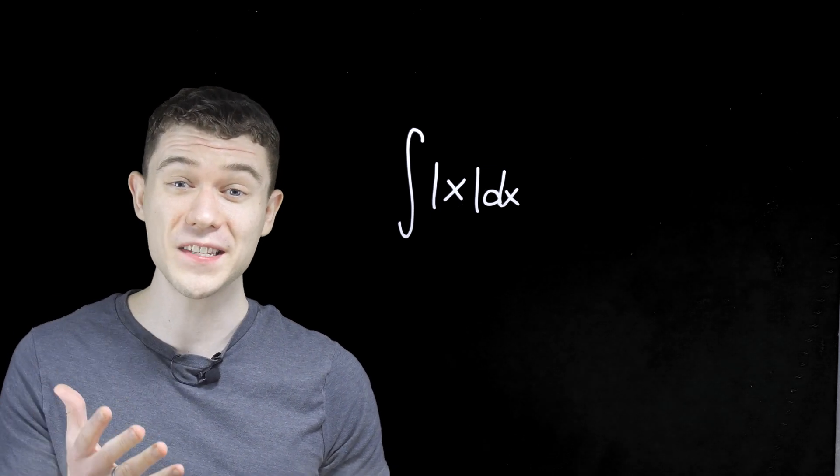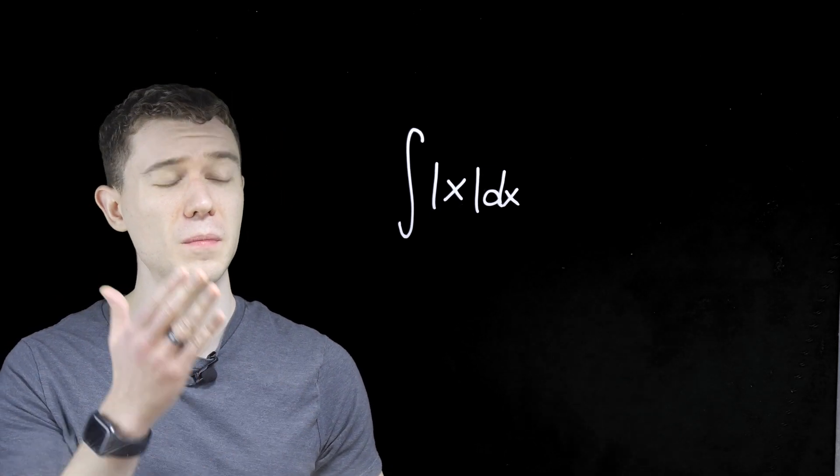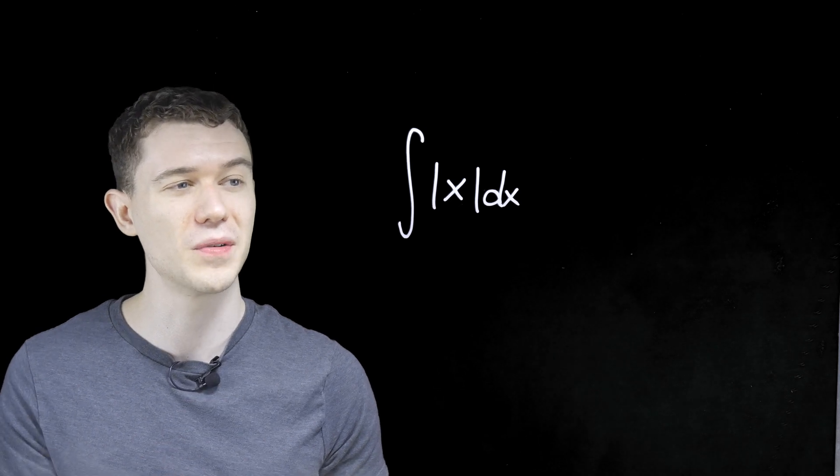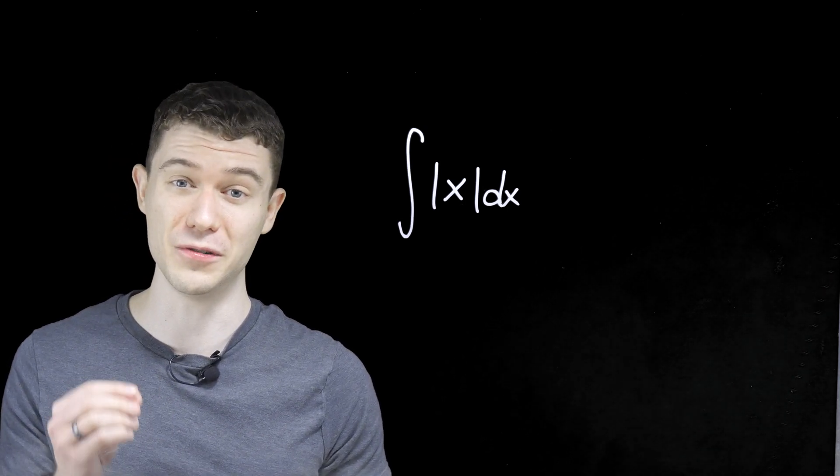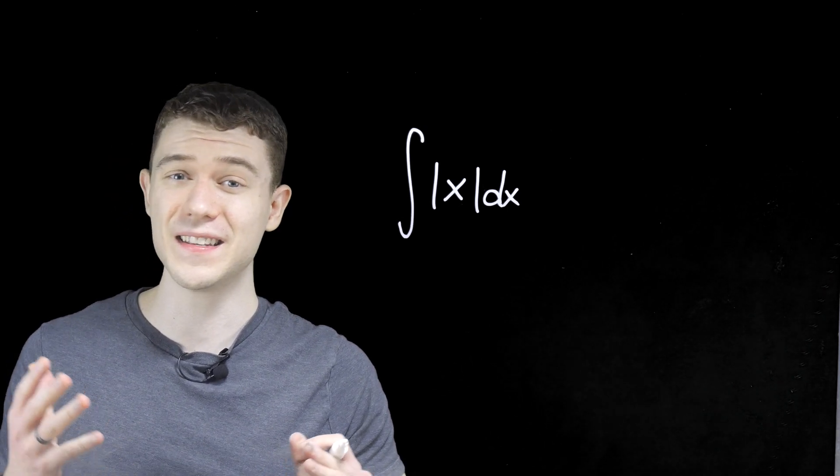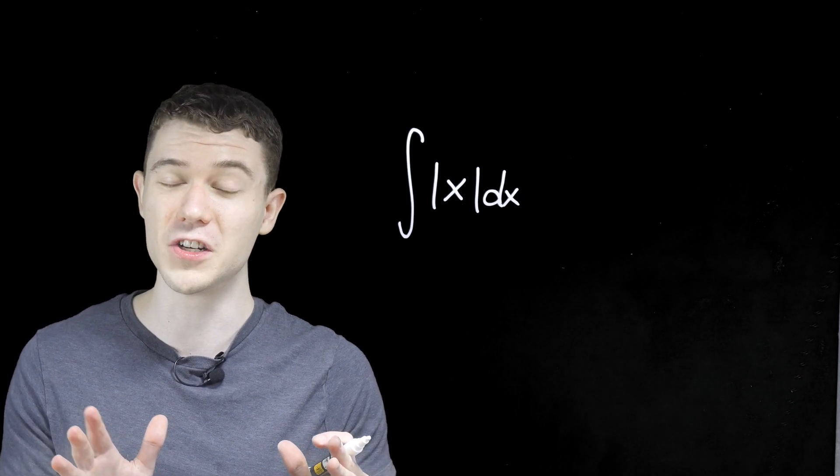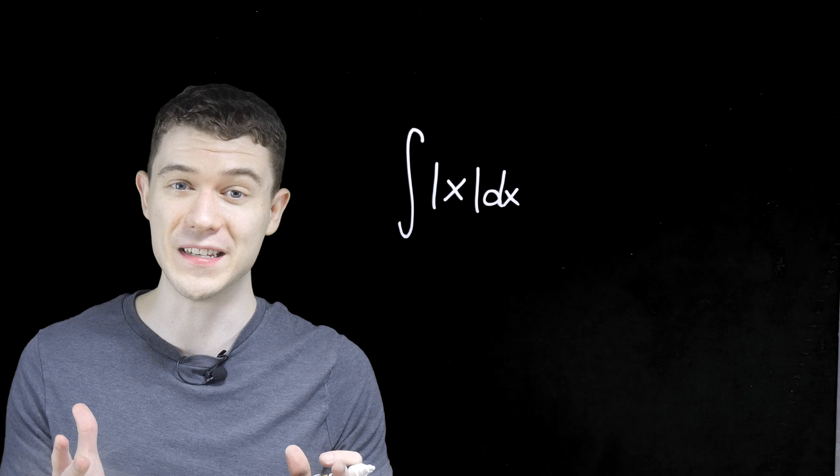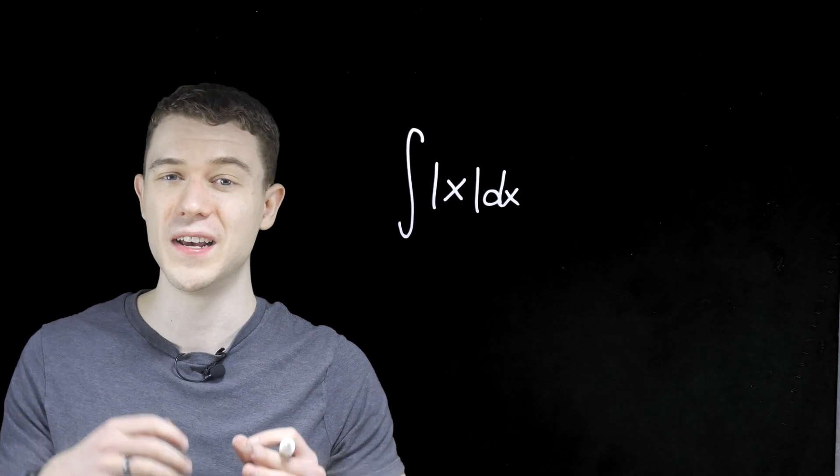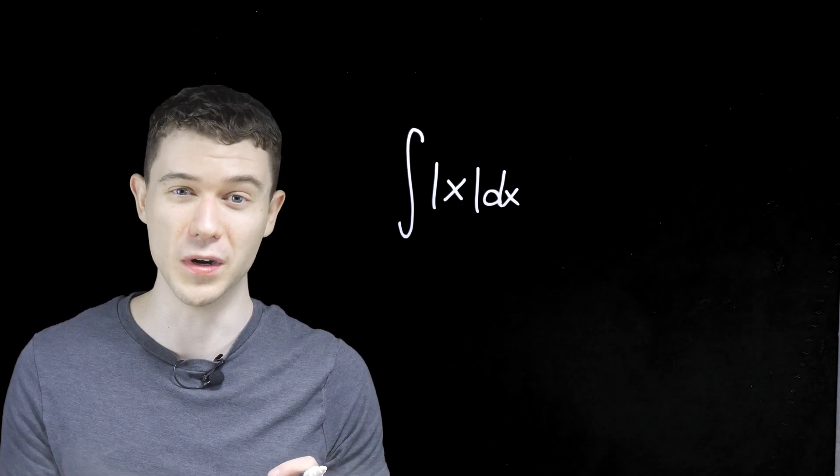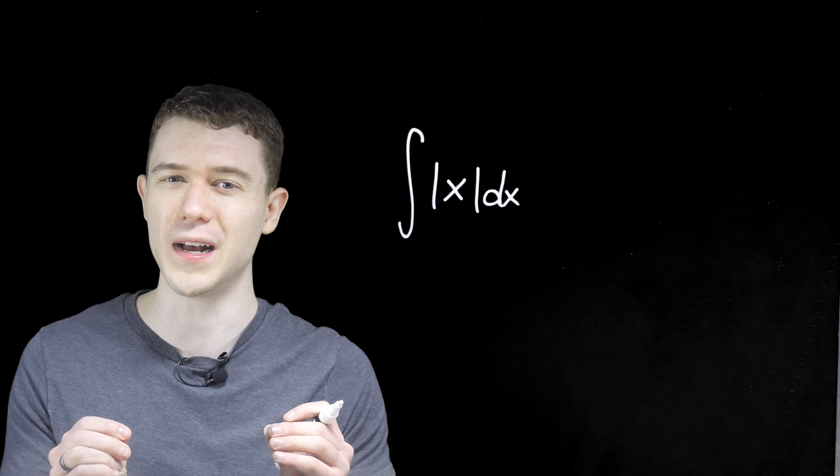Hey everyone, it's Brian. In this video we're going to solve this problem: the antiderivative of the absolute value of x dx. This is a little bit tricky because the absolute value function is not differentiable at zero. It has that pointy edge, that cusp, if you will, that makes it not differentiable at zero.